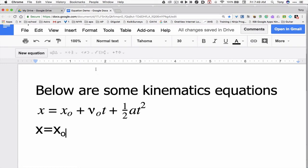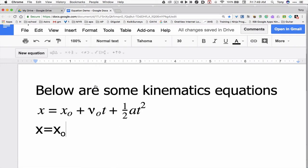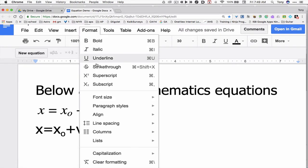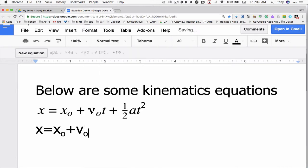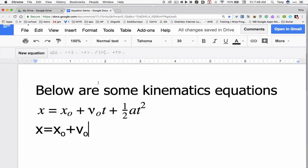Now to get it back on the baseline where the X is, I'll go to format and I'll hit subscript again. That'll turn it off. Then plus V, I need a subscript for the zero. So insert subscript zero. Turn off the subscript and now you can see where the keyboard shortcuts come in handy. Turn off the subscript and type the T.